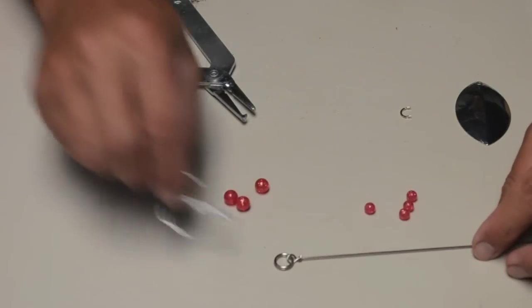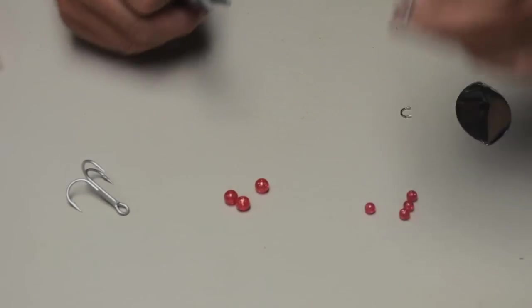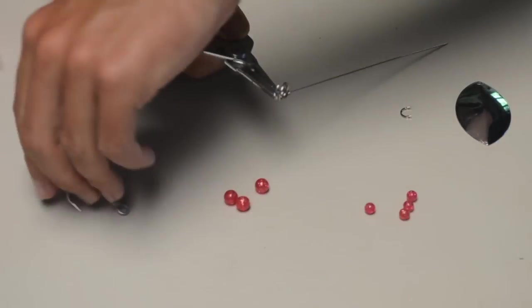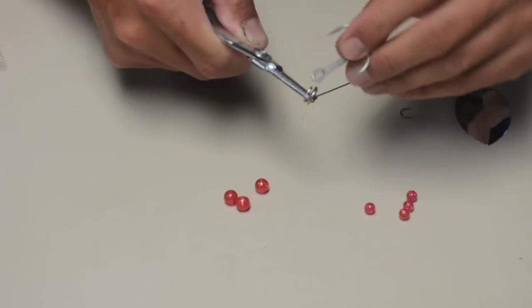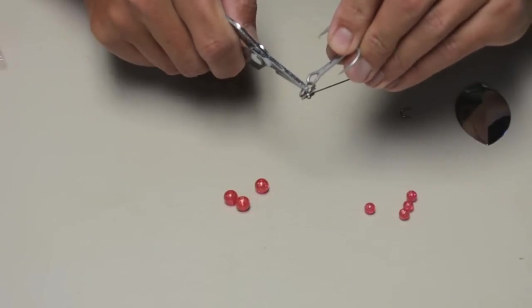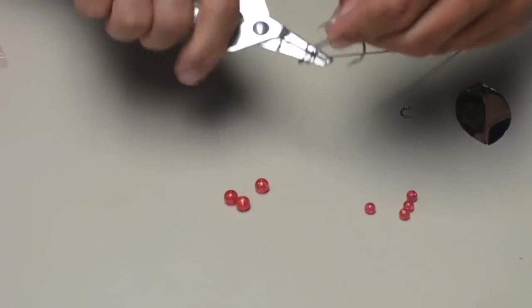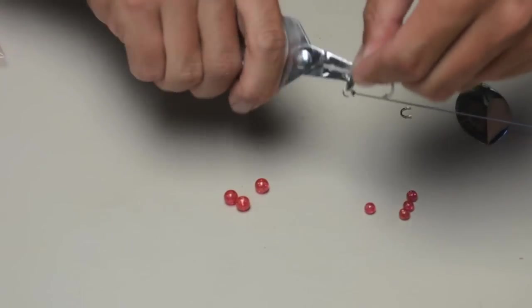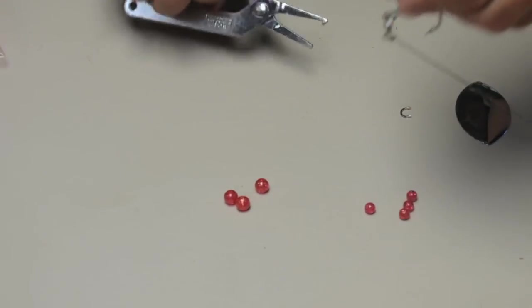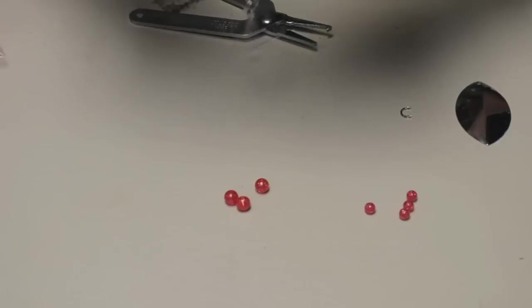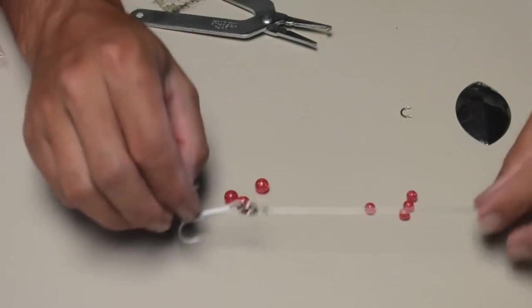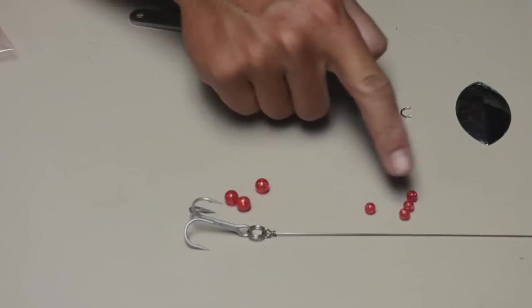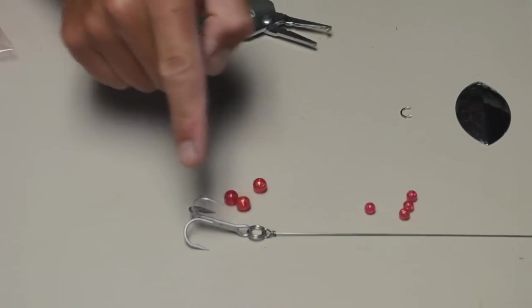So all I've done is just attach the split ring to the wire shaft. Next I'm going to go ahead and put the hook on here. It's a pretty hefty hook so it takes a pretty wide gap to get it on. There we go. Alright, so what we have now is the wire shaft, the split ring, and the hook.